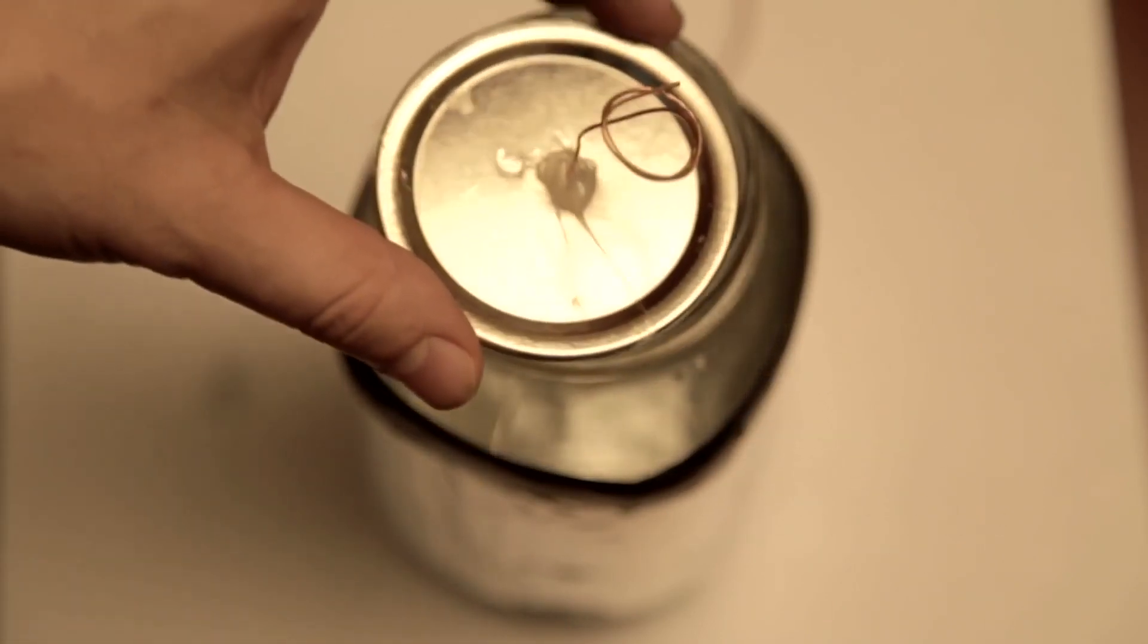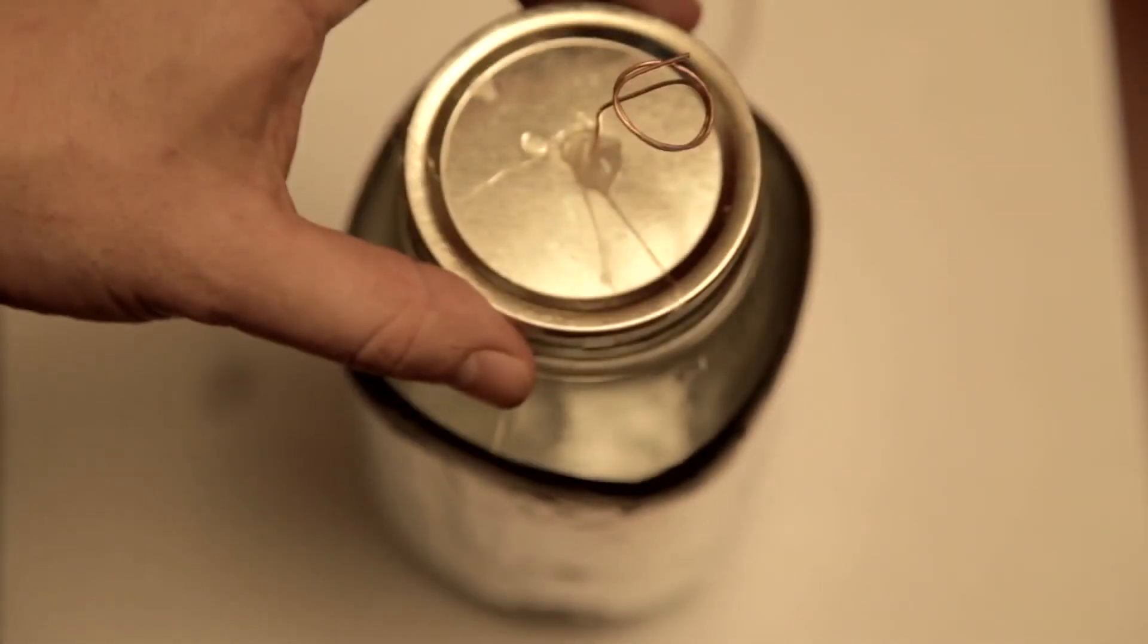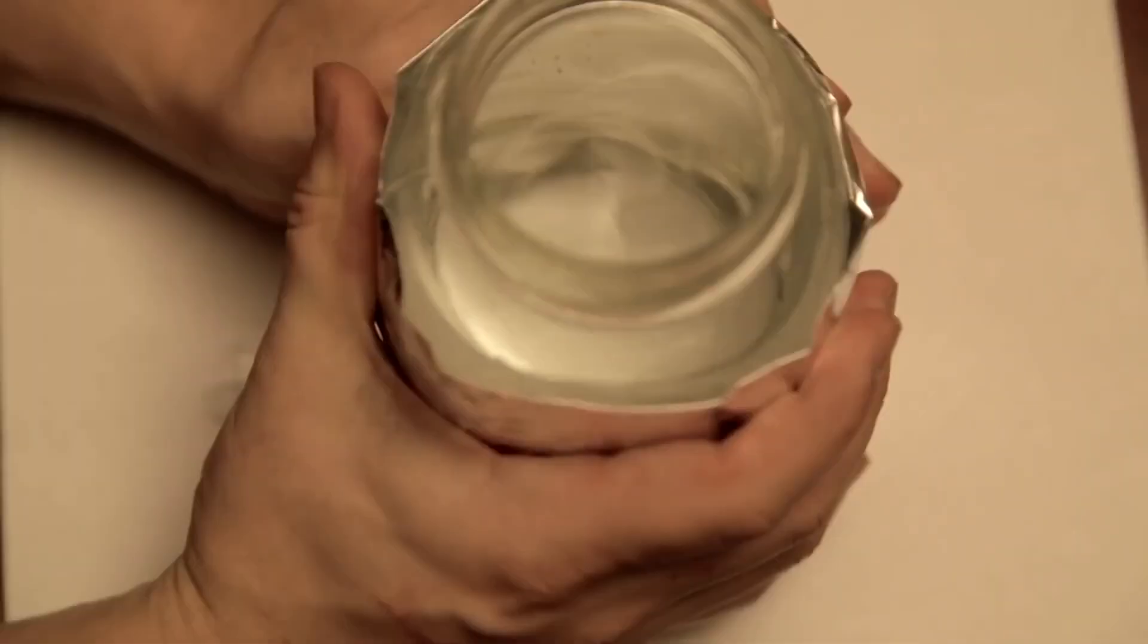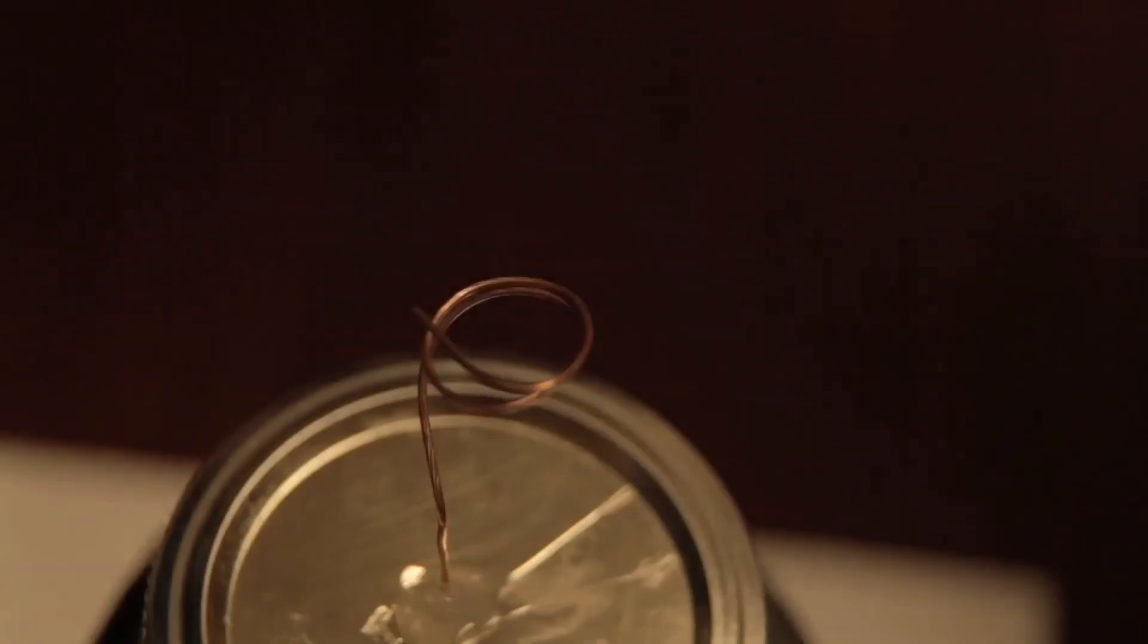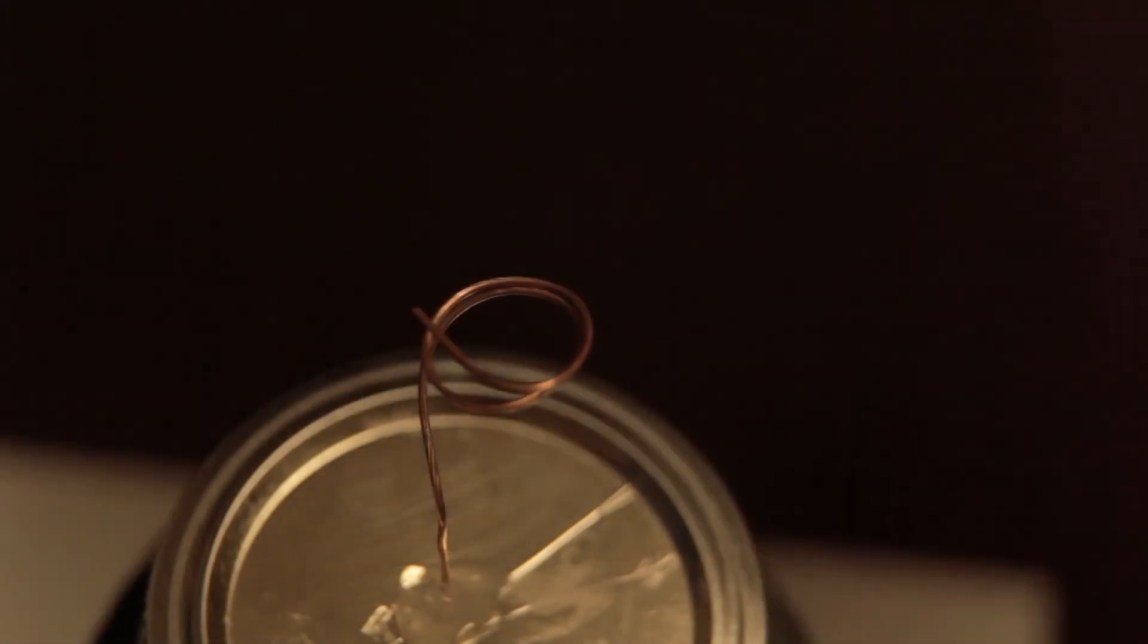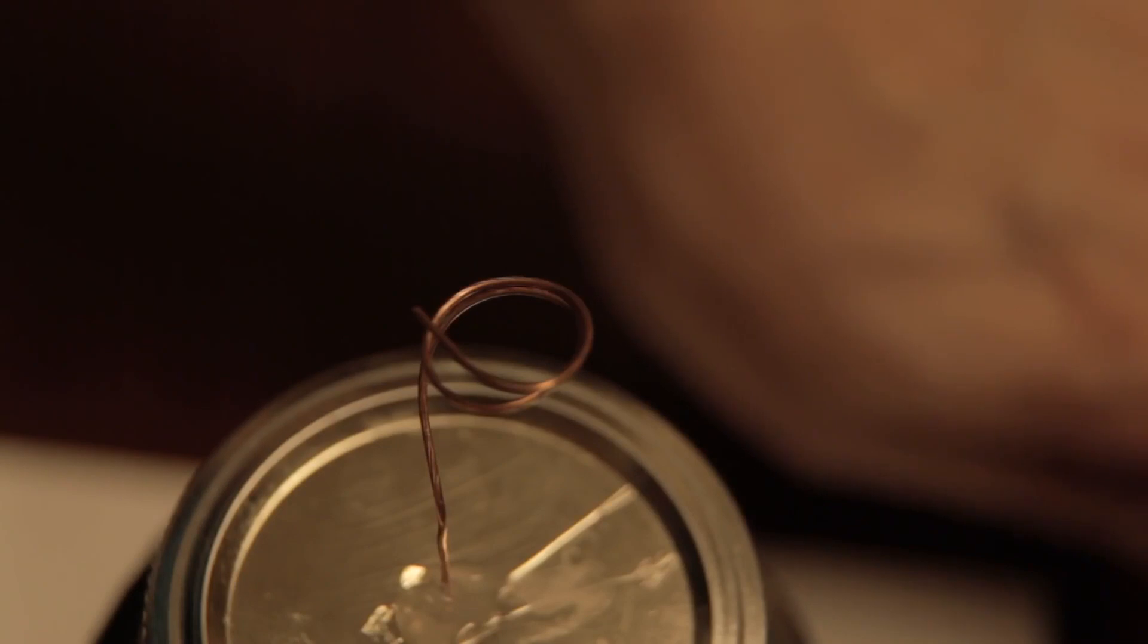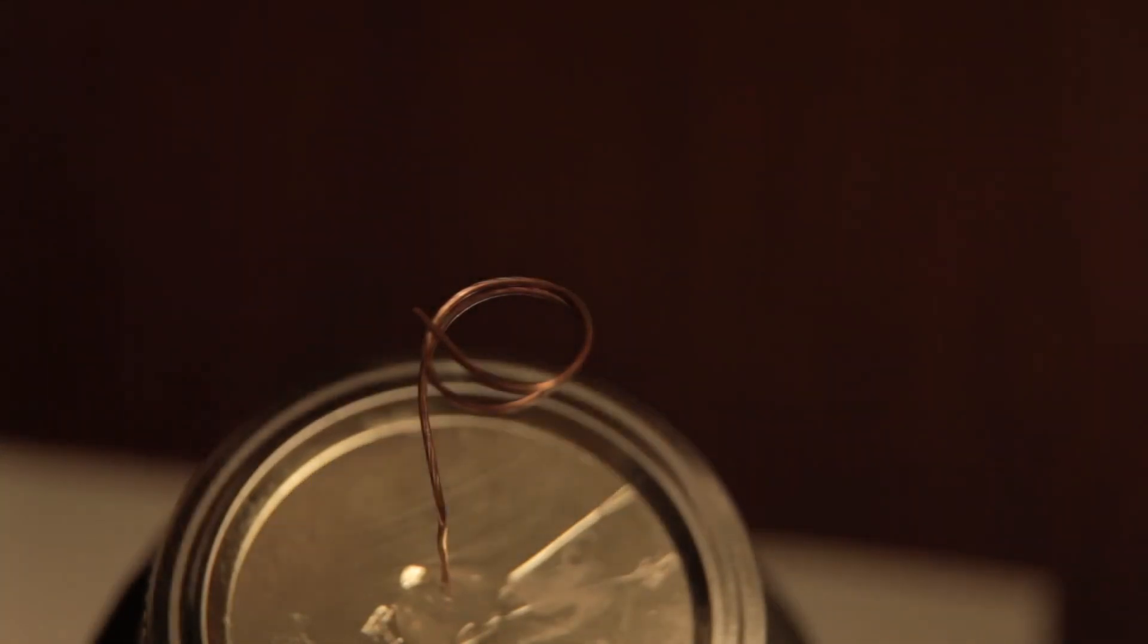What we now call the Leyden jar was a glass jar with water inside and a metal probe running out the top. Franklin also wrapped the outside in a conductive metal. When he brought a charged conductor towards the top probe, a discharge would occur and stay trapped in the jar. More importantly was that the jar could be charged multiple times.